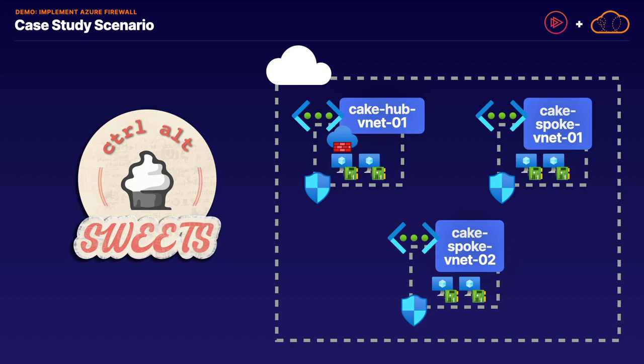I just wanted to bring something in that we're not necessarily going to work within our demonstration, but just wanted to add it so that we can think about how other networks may come into play. There will be a peering connection if you want to test further on implementing Azure Firewall to route traffic from Spoke 1 into the Hub VNet Azure Firewall. Commonly, we'll be implementing it in a Hub and Spoke design with multiple networks that we want to route through that Azure Firewall.